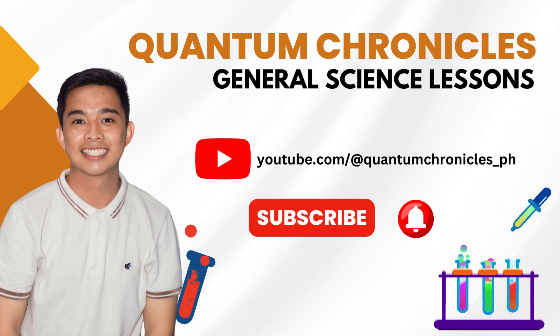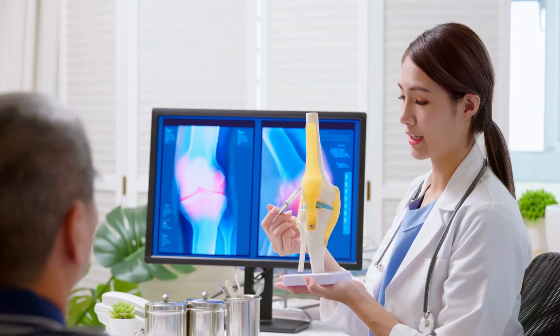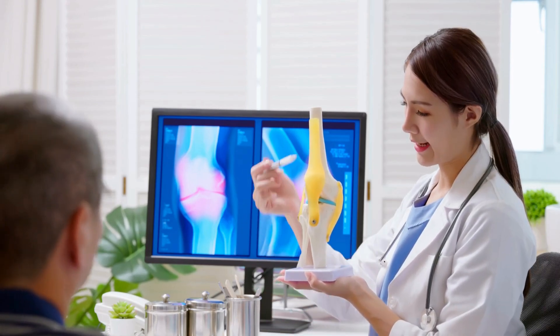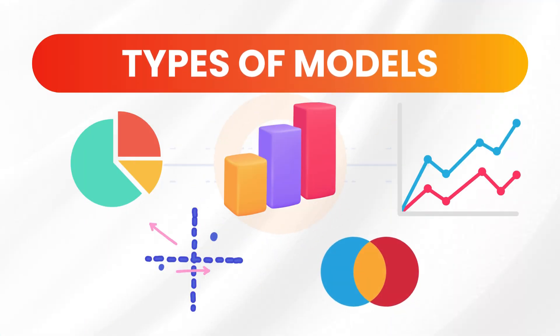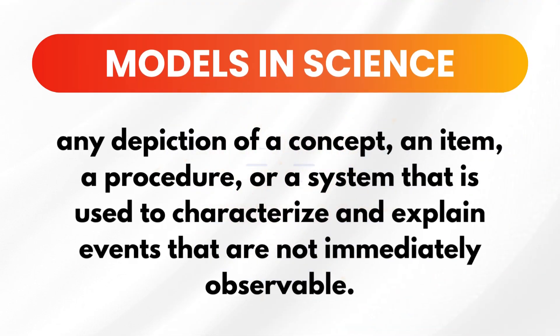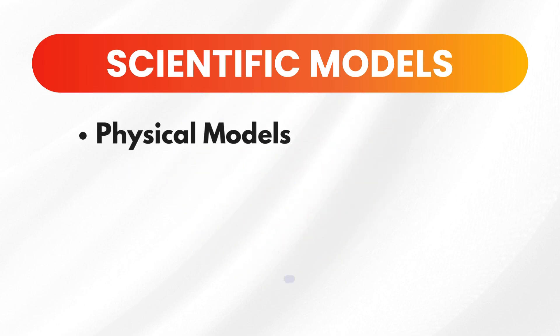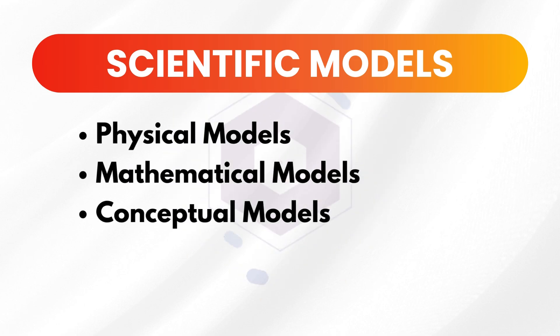Alright, let's dive in! In our previous discussion, we talked about the different models that scientists use in presenting information gathered from their experiments. Models are any depiction of a concept, an item, a procedure, or a system used to characterize and explain events that are not immediately observable. Scientific models are the simplified representation of real-world phenomena. These models may be classified into physical, mathematical, conceptual, and computational.